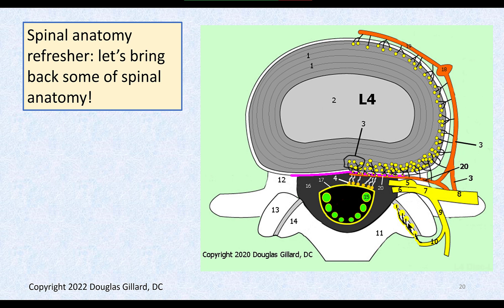The spinal nerve forms where the sensory and motor roots join in the intervertebral foramen — it's a short section that immediately splits into a ventral ramus and a dorsal ramus. The dorsal ramus branches into a medial branch and a lateral branch. The medial branch of the dorsal ramus is very important clinically because it gives sensation to the facet joint or zygapophyseal joint. This is where pain comes from when facet joints are stuck or degenerated.